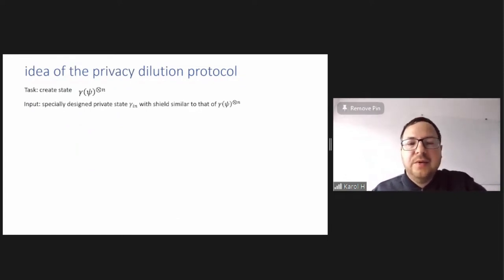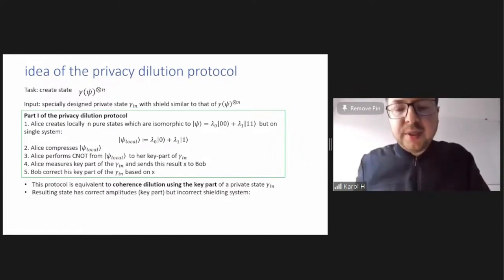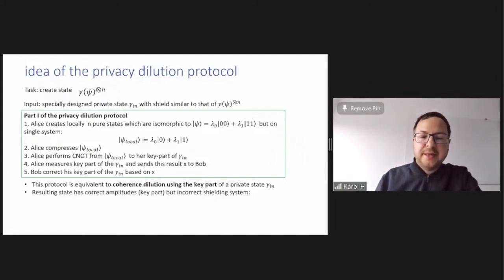And so what's the idea of this protocol? The task is to create this state and the input, we designed some gamma in state with a shield which is already similar to the shield, the shielding system that we want to achieve, we want to create, of gamma upside and so on. And there are two parts of the protocol. The first one is kind of coherence dilution, in a sense. So Alice creates locally n pure states, which are isomorphic to this psi. It should be a and b instead of lambda zero and one, sorry about that. But this is this twisted pure state, the pure state that is twisted. So she creates an isomorphic copy like in form of coherence, which is lambda zero plus lambda one, one. Then she compresses it because it's a pure state can be compressed and then performs a c-not from this psi local compressed part to the key part of gamma in, measures the key part, sends the classical outcome to Bob X, and Bob corrects his key part of the gamma in based on X.